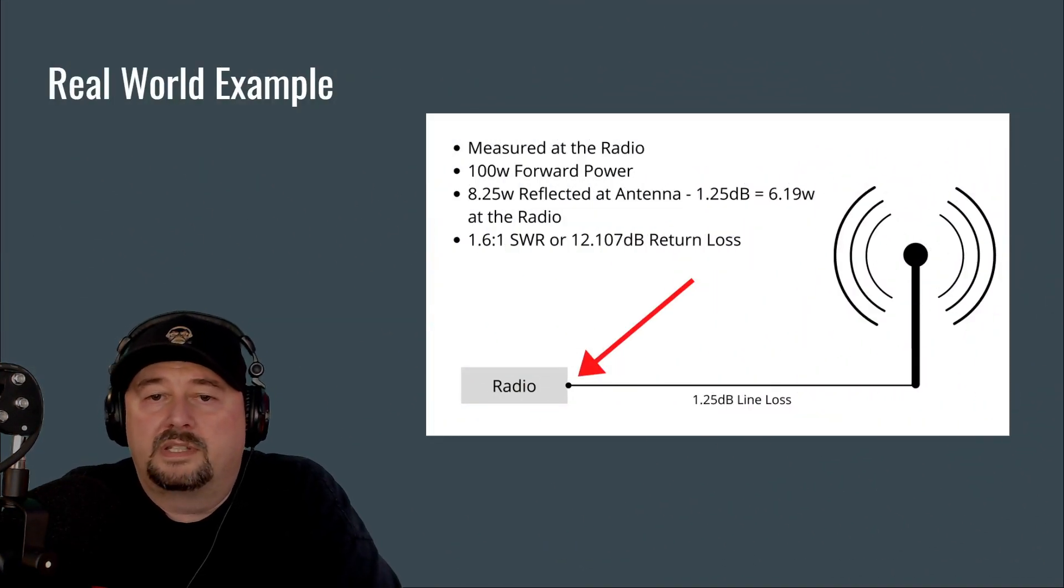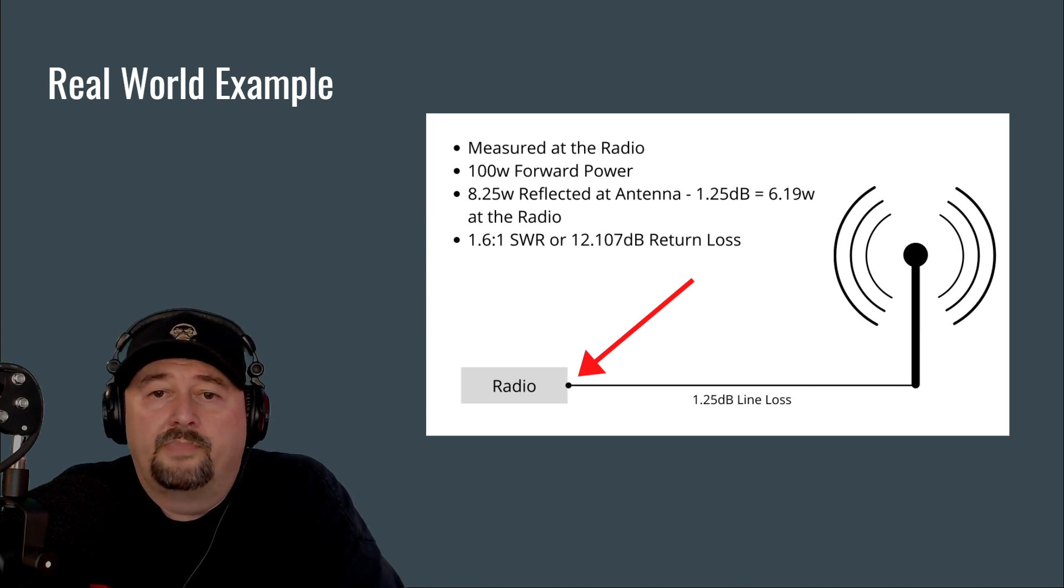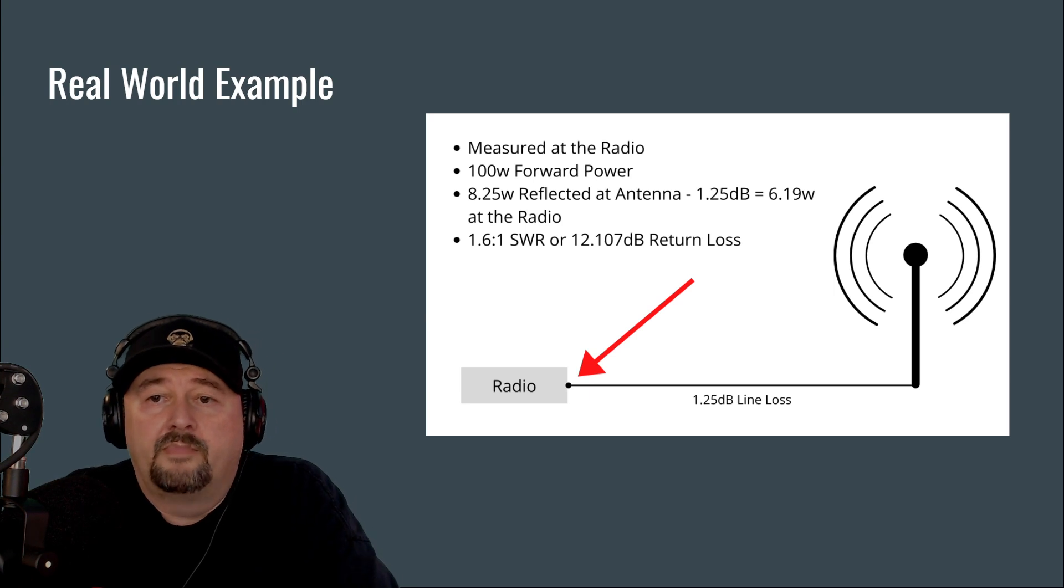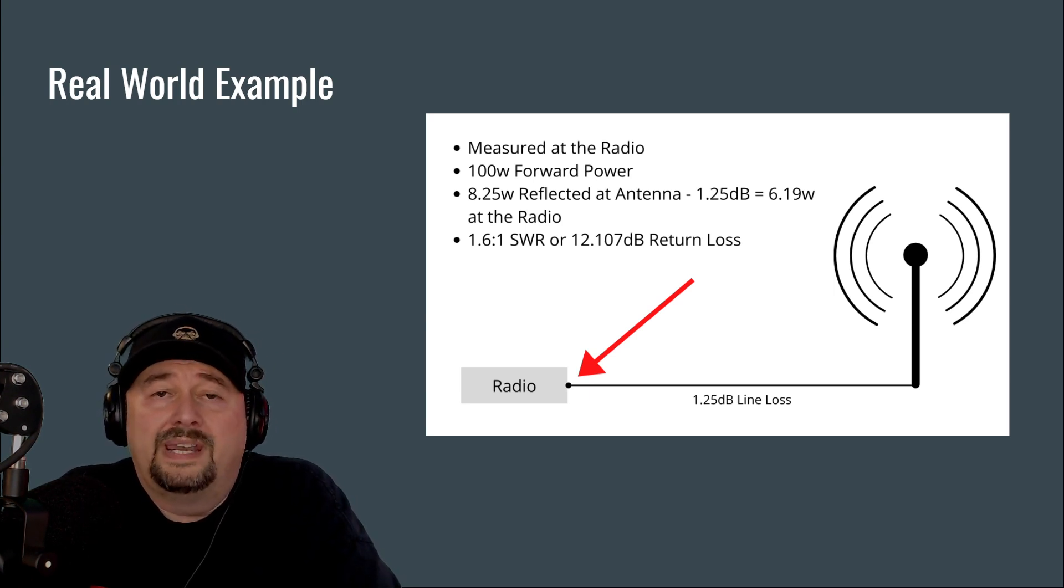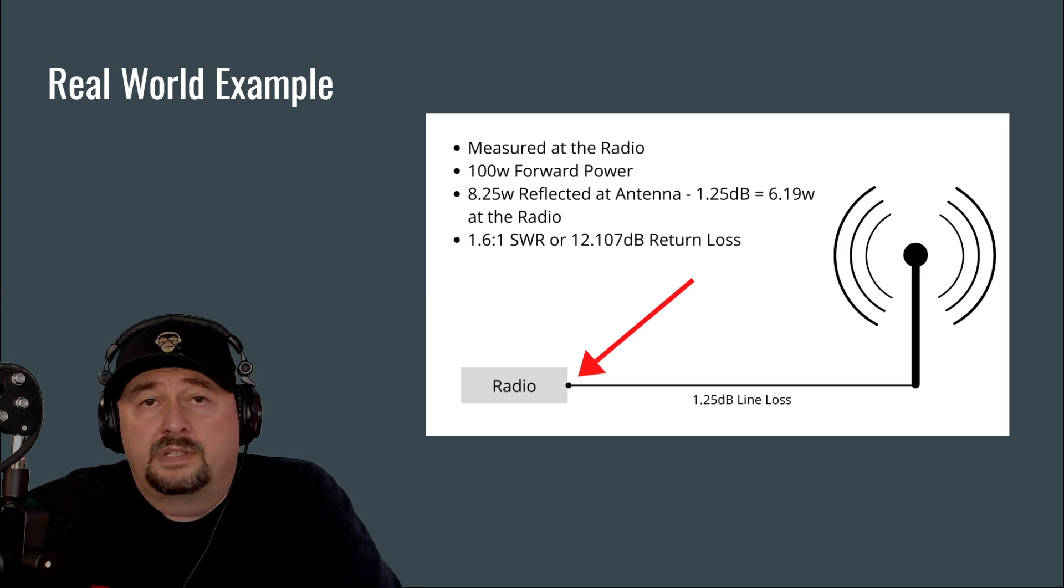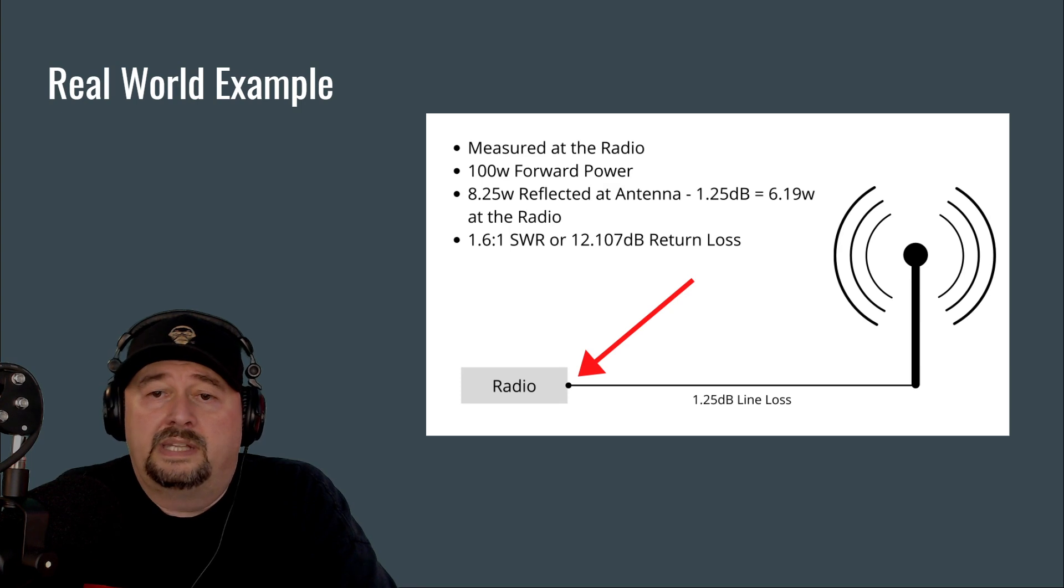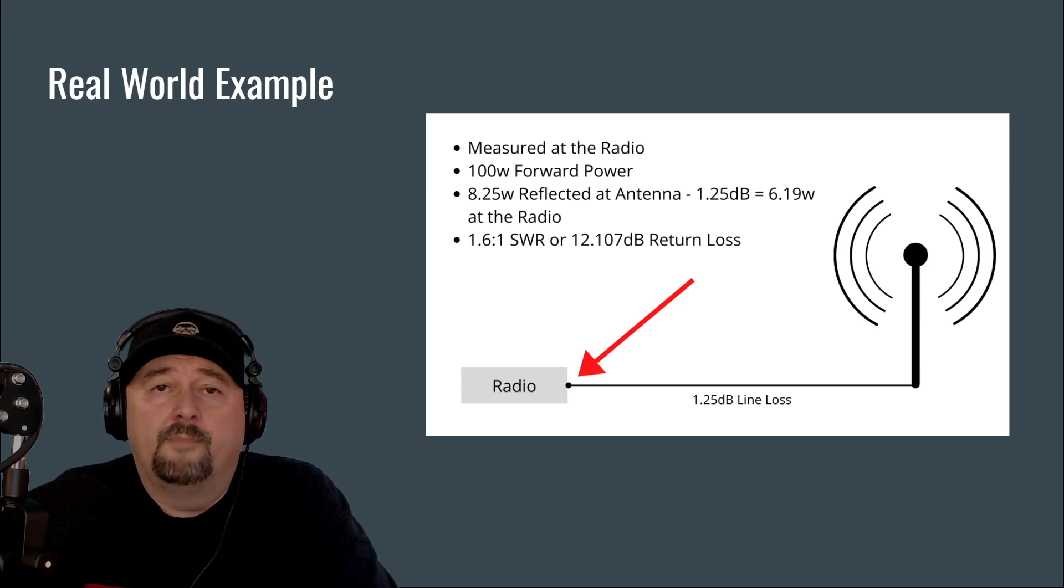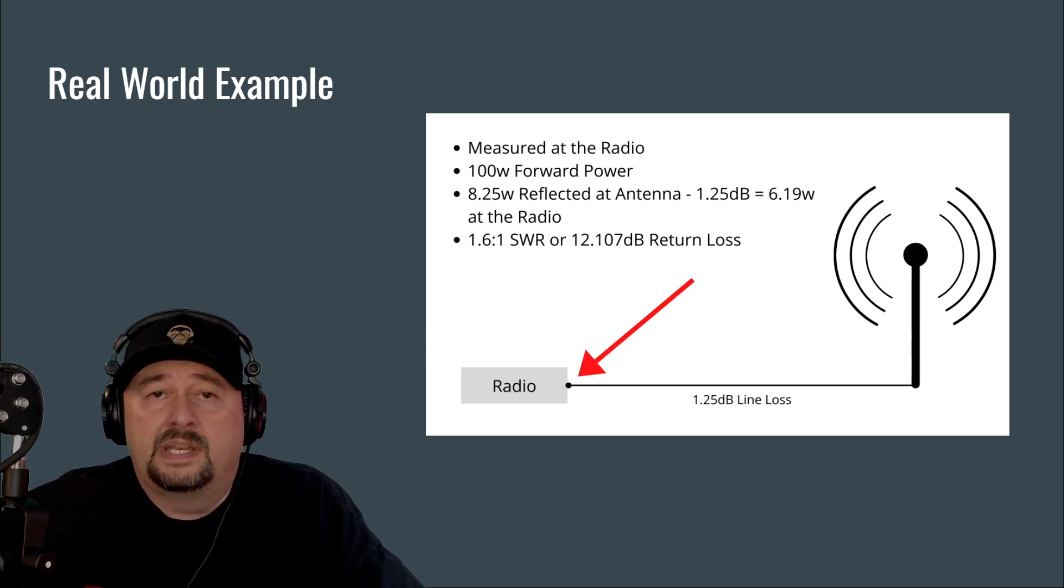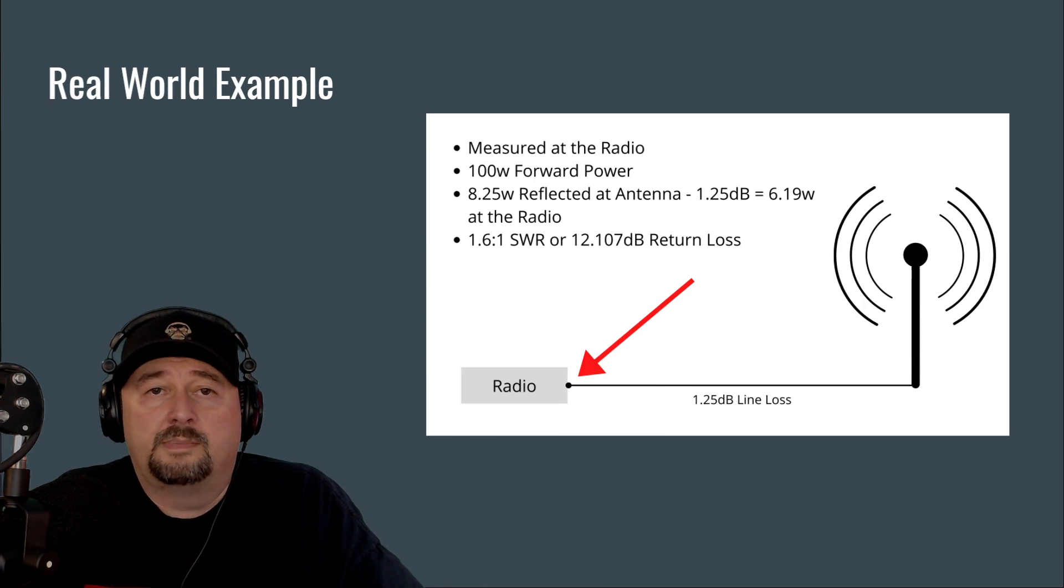Now you might be saying, hey, but what happens if you measure your SWR at the radio, as opposed to the antenna feed point? That's how a lot of people do it. You still show 100 watts in forward power, but your reflected power is 8.25 watts, because you have to account for the line loss coming back from your antenna. This really turns into 6.19 watts at the radio. So your SWR at the radio is going to look like 1.6 to 1, or it's going to look like 12.107 return loss. Now you might be thinking, 1.6, that's not really bad SWR. And it's not, but your real SWR at your antenna is 2 to 1. That transmission line loss is masking the true SWR, or the impedance match, of your transmission line and your antenna. 1.6 is the impedance match between your radio and your antenna system, which includes your transmission line.